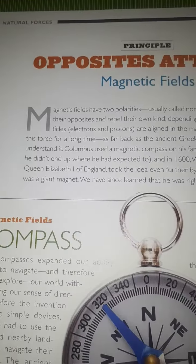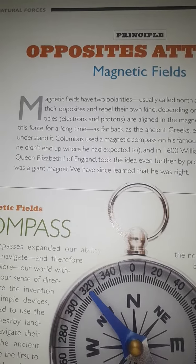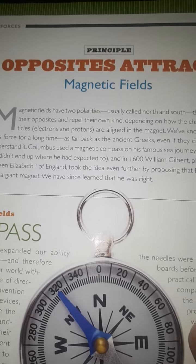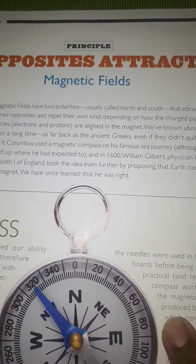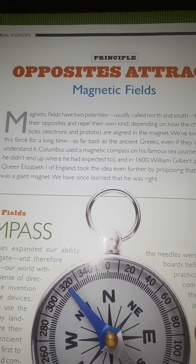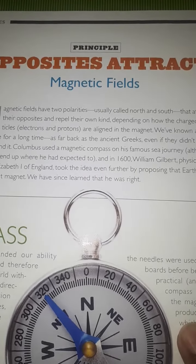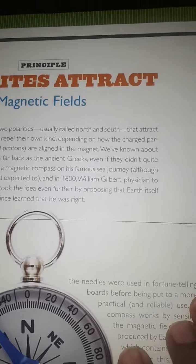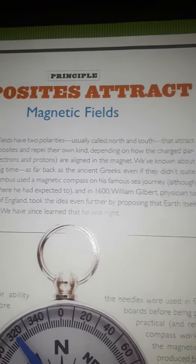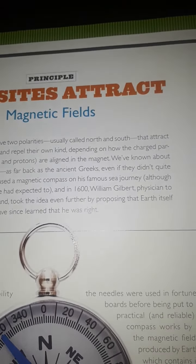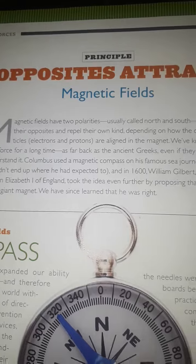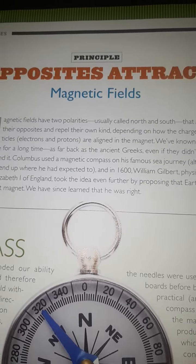Magnetic Fields have two polarities, usually called North and South. They attract their opposites and repel their own kind.